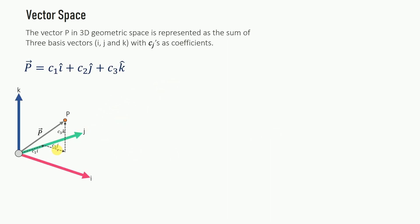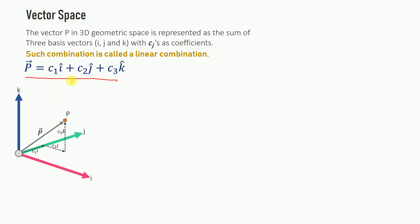Let us introduce some concepts of linear algebra called vector spaces — this is not a mathematically rigorous definition, just an introduction so that what follows makes sense. A point in 3D space can be represented as a linear combination of the basis vectors i, j, and k. This combination to represent a point or a vector in 3D is called a linear combination of the basis vectors. Any point in 3D space can be represented as a weighted sum of these basis vectors.